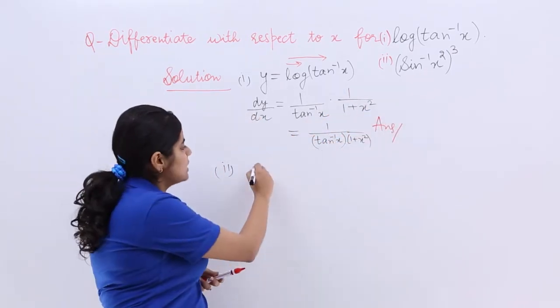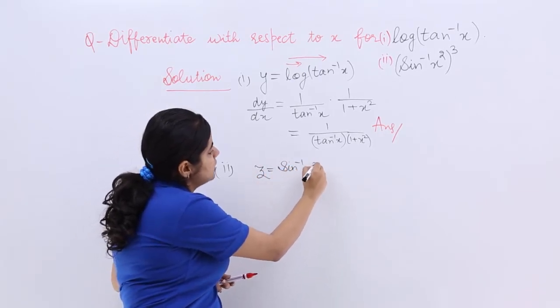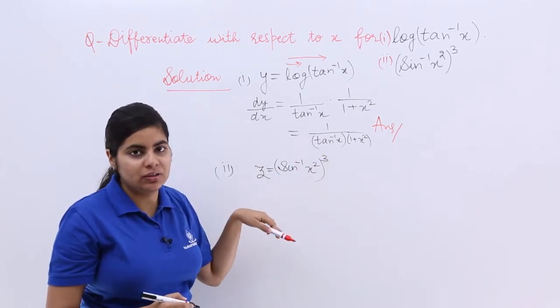So it says sin inverse x square whole cube. So let's again name this as any other thing. Let it be z. So let z be sin inverse x square whole cube. Please do not make any mistake in copying the question.